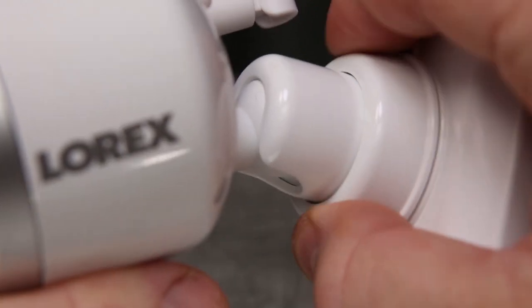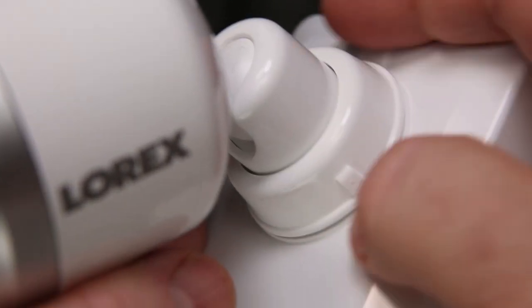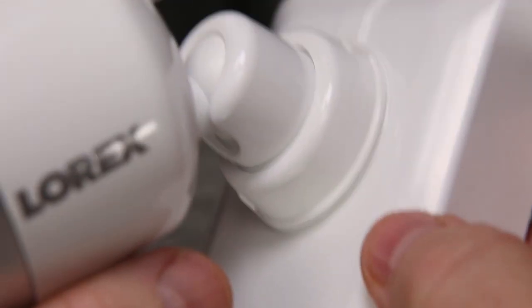Adjusting the camera angle is easy. Simply loosen the collar around the camera housing and rotate the camera to the desired angle. Then re-tighten the collar to maintain the camera at the desired angle.